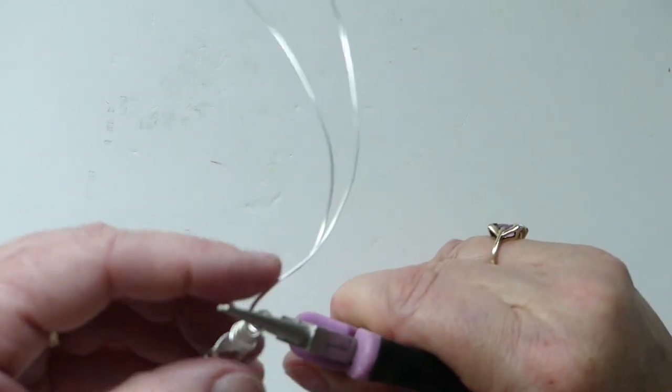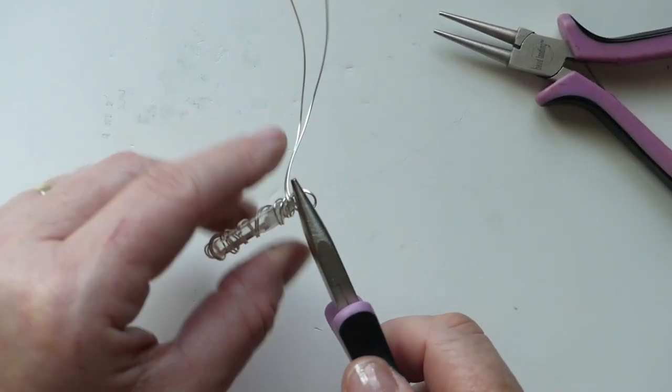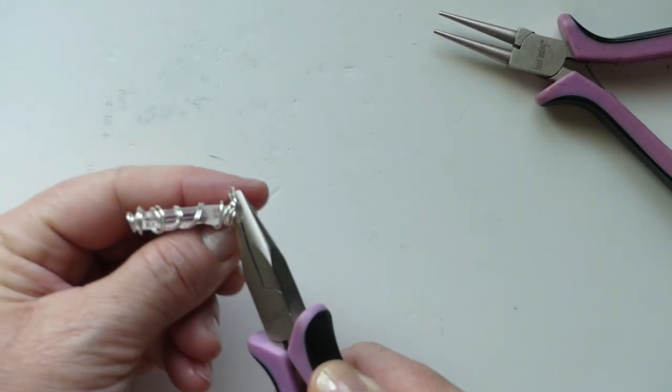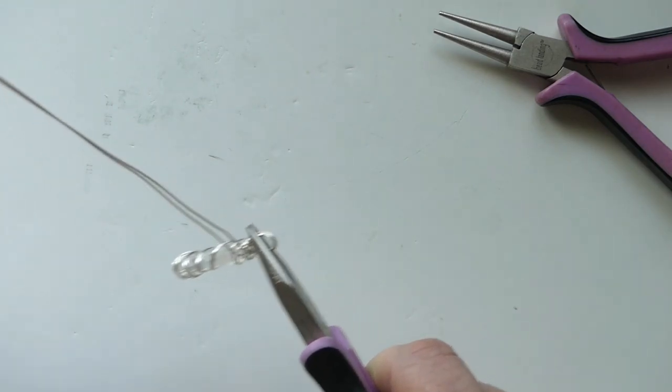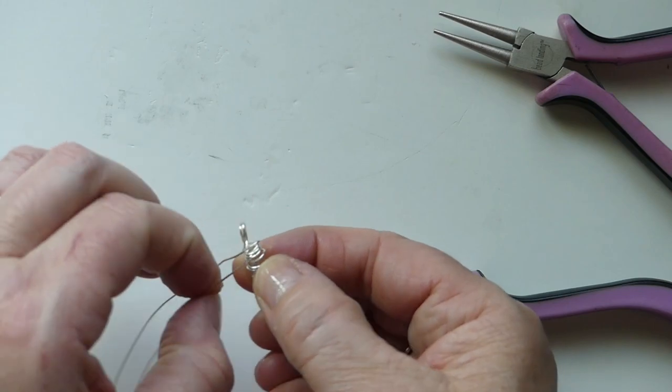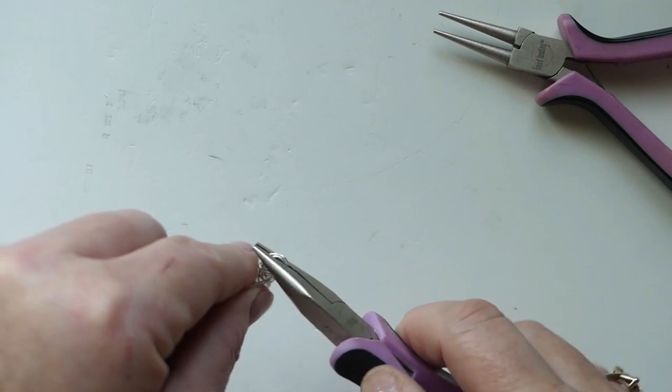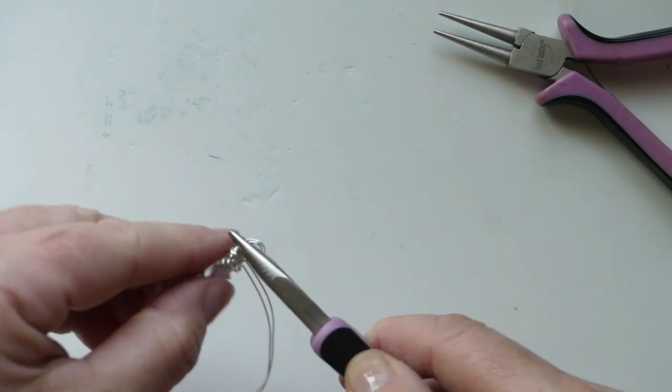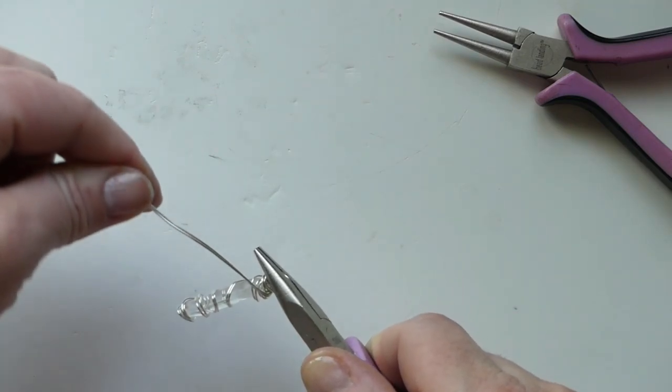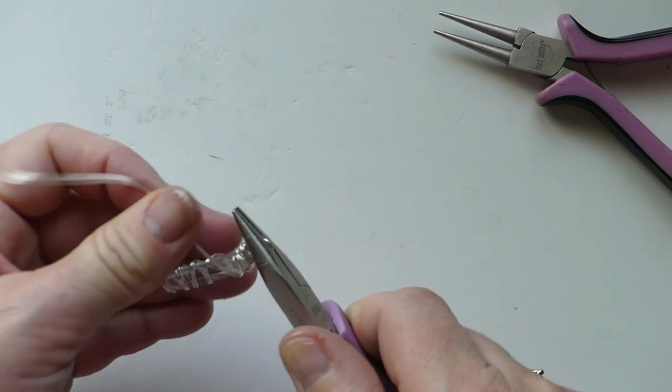I'm going to create a loop. Try and keep it as close together as possible. Hold on to that nice and firm. We're going to try and keep our wires together for starters. Just keep a couple of wraps around there.